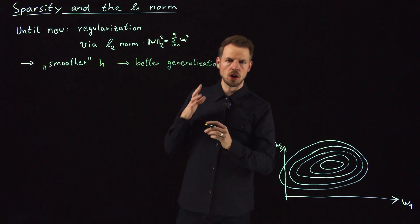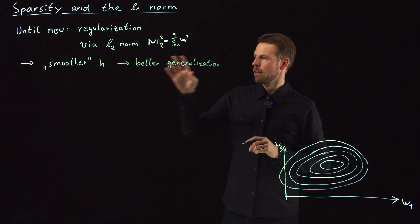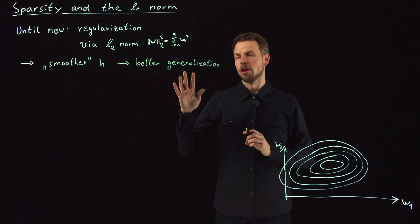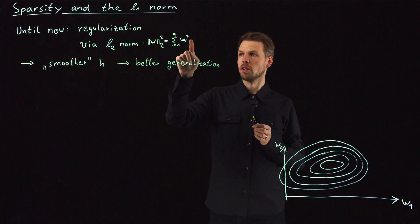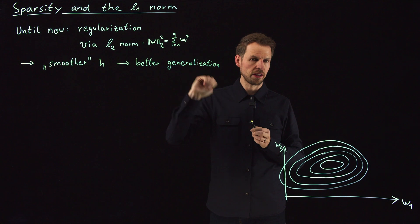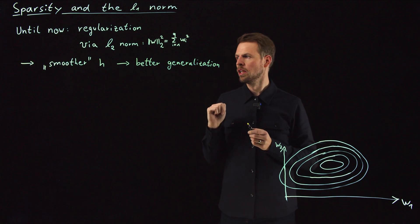For this reason, we often use the 2 norm as a regularization parameter. It all has very nice properties because it is differentiable very, very easily. This is very favorable for optimization.